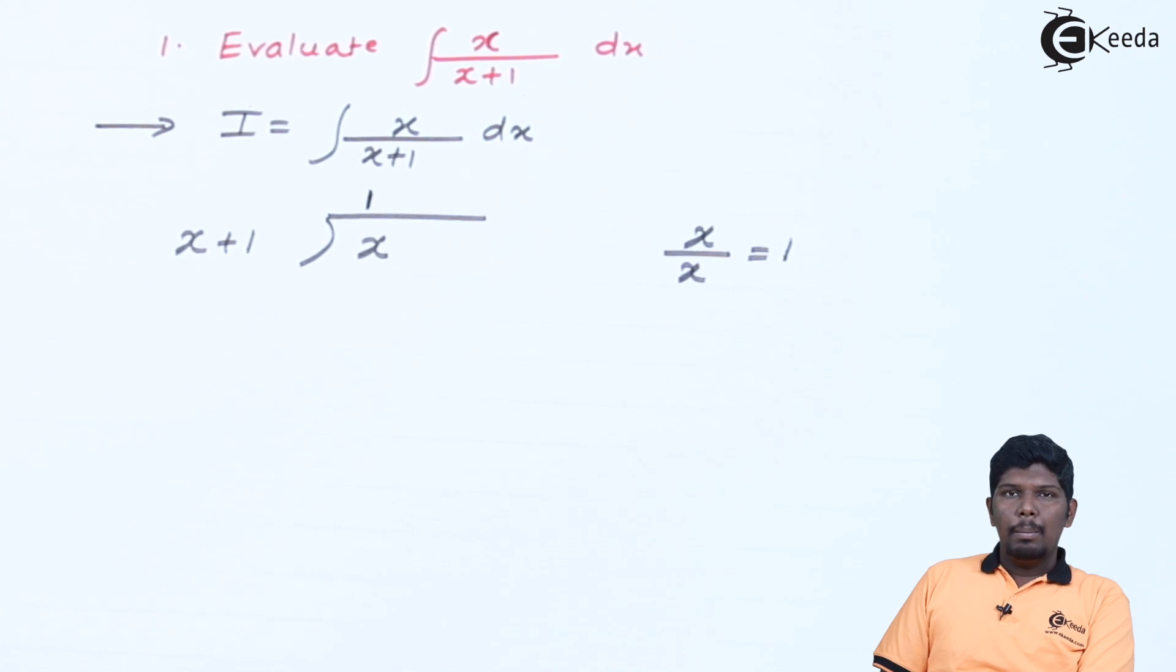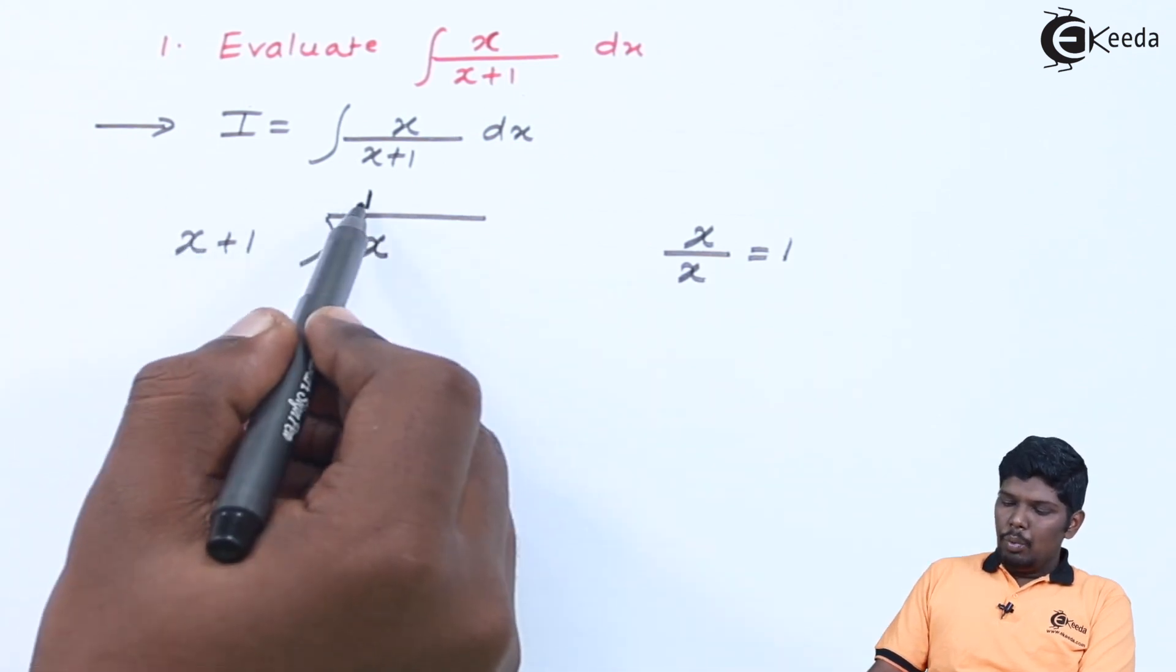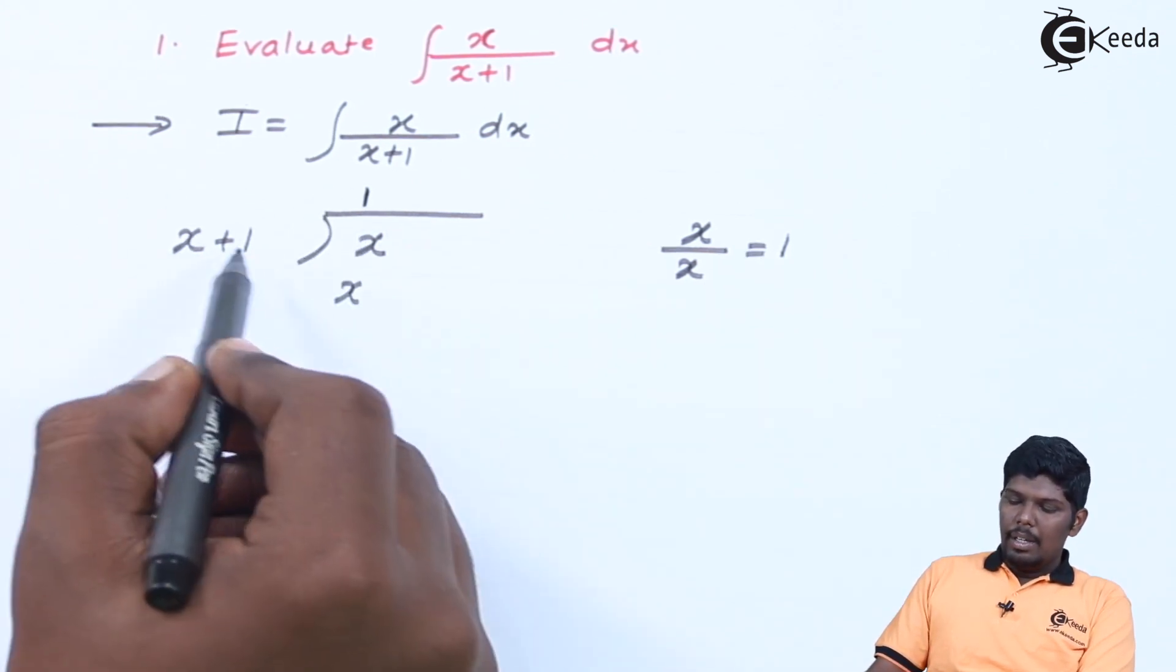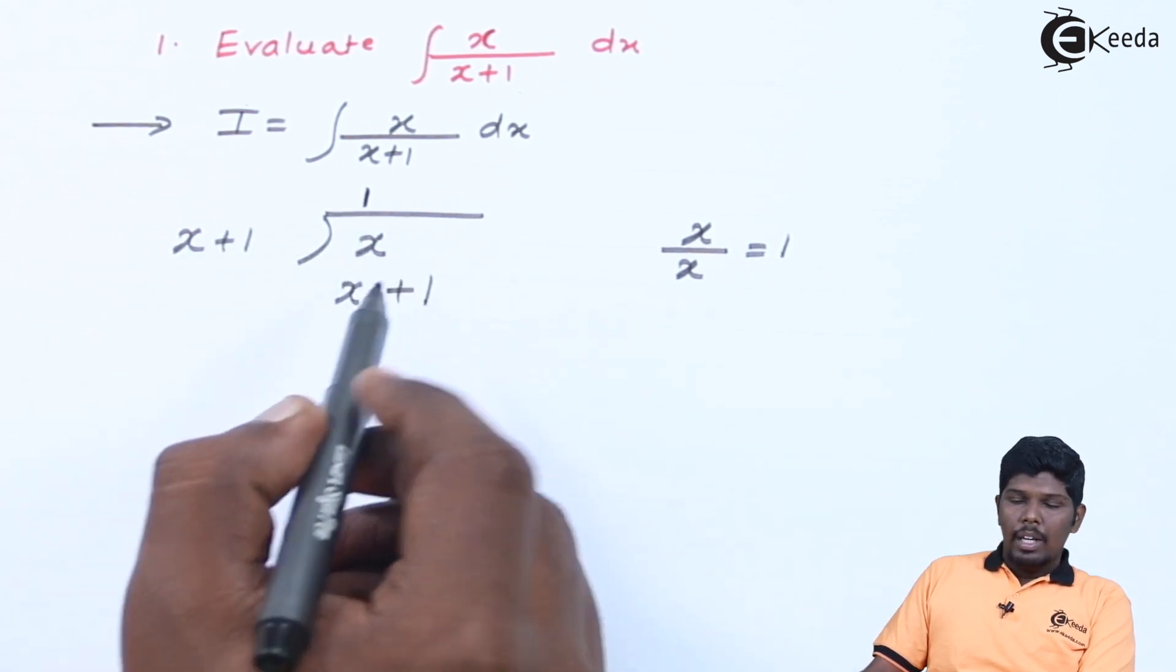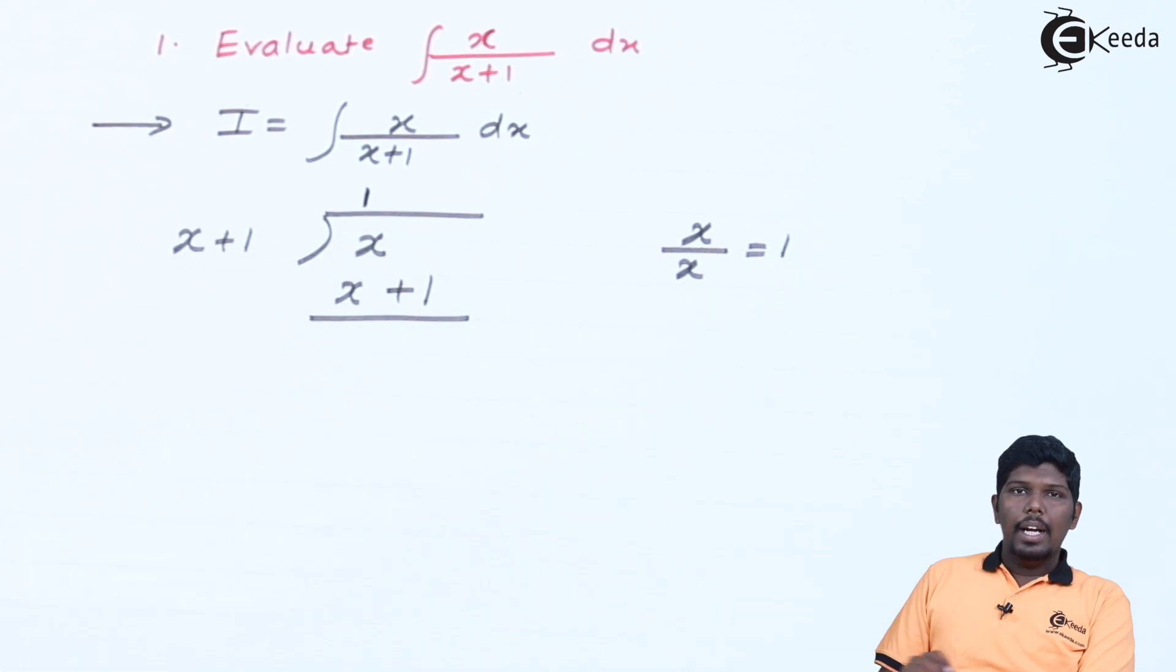Then we will start multiplying x into 1 will give you x plus 1 into 1 will give you plus 1. In the next step we will subtract this equation.